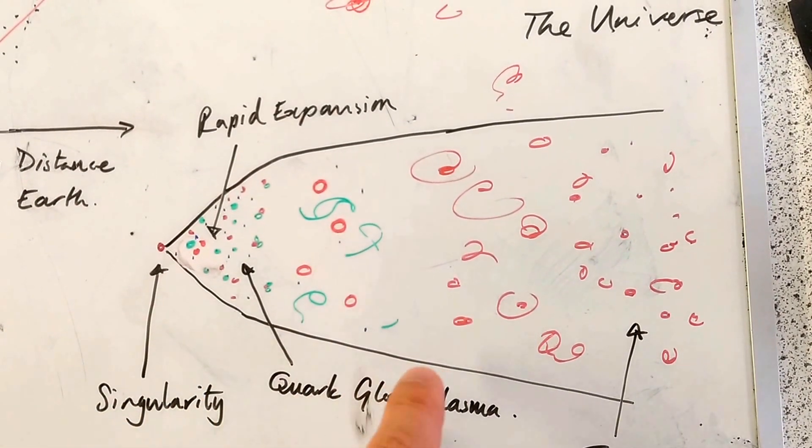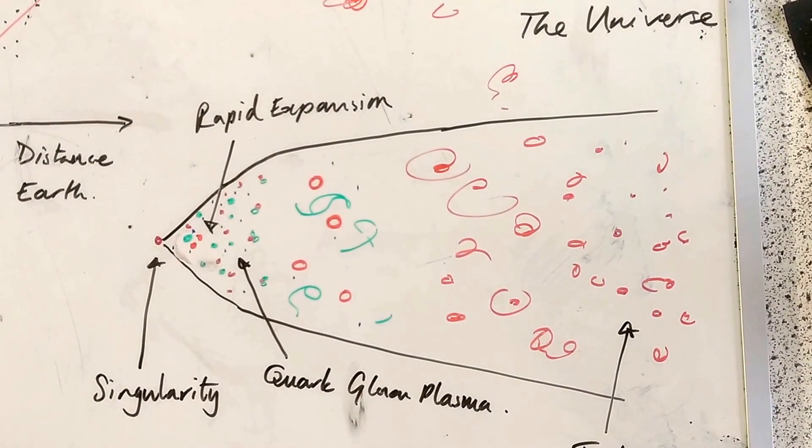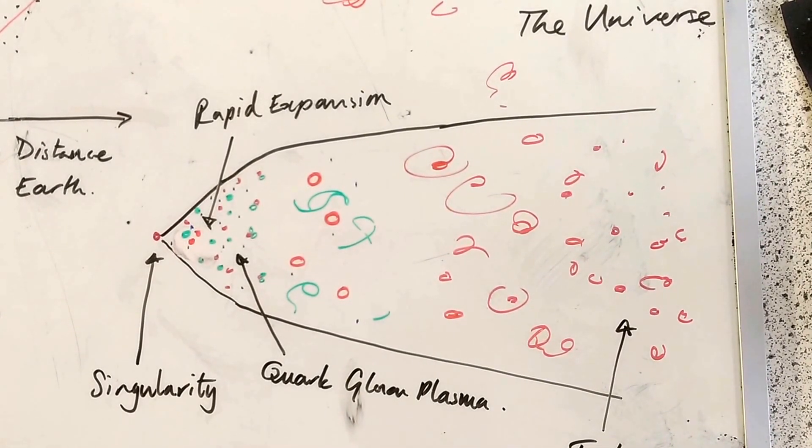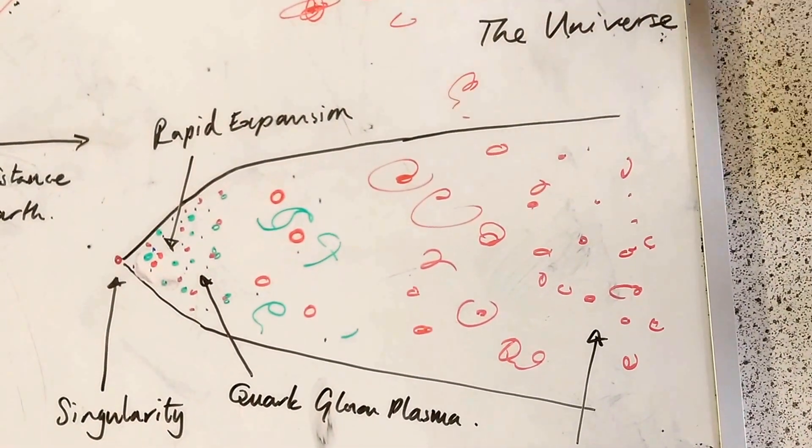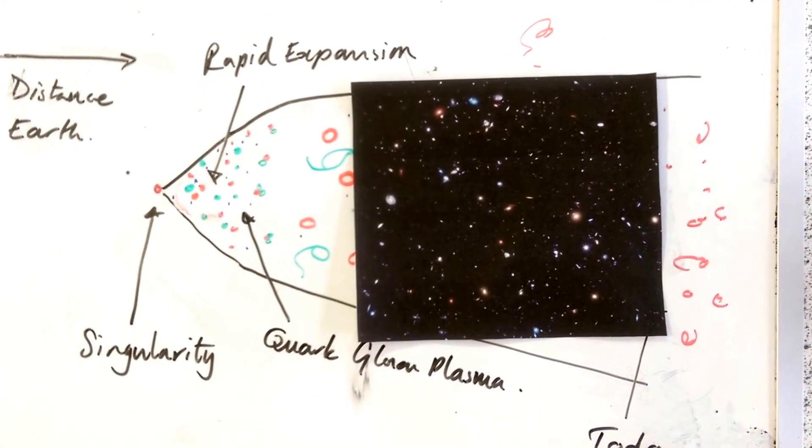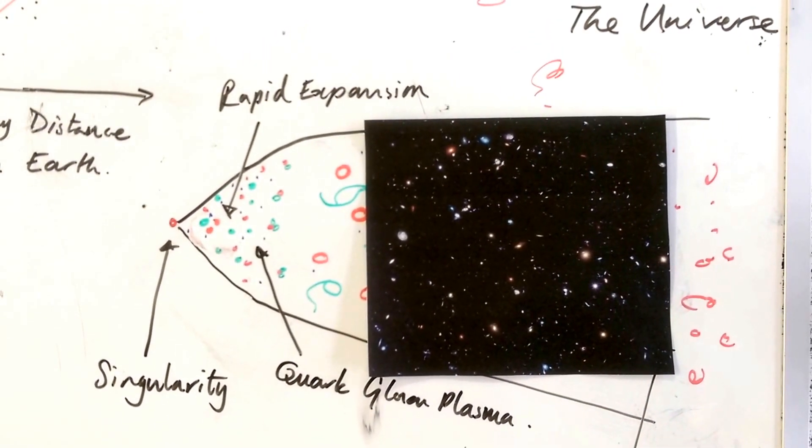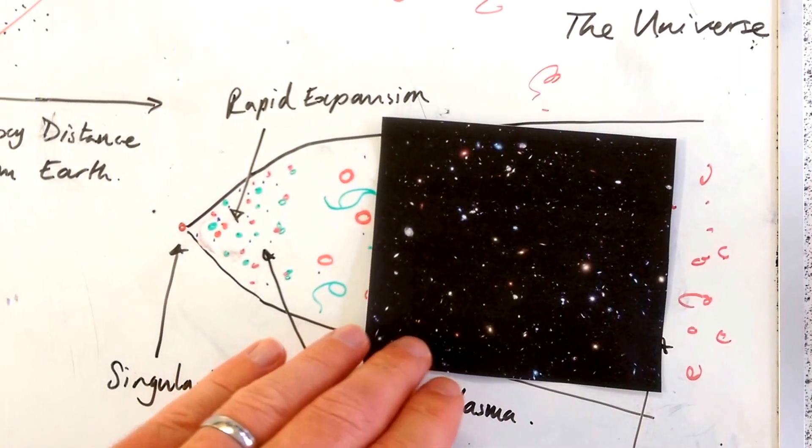And from then on, there was a much slower, steadier expansion. And that fusion became stars, and those stars stuck together in galaxies. And now, we have the universe as it appears today, which is literally billions and billions and billions of galaxies, all made of billions and billions and billions of stars.